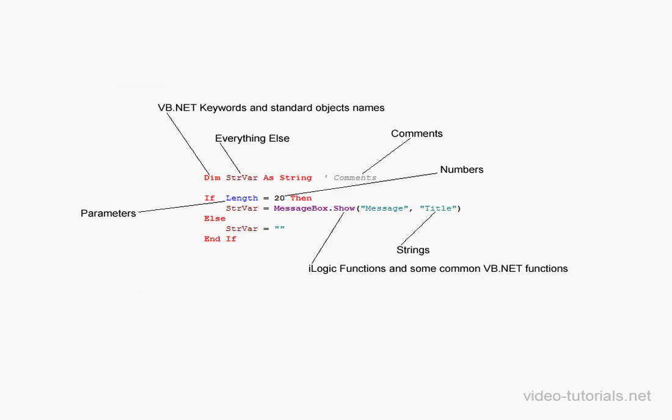Here's a diagram that explains the color coding used in iLogic. Red is for Visual Basic keywords and standard objects. Gray is for text that's commented out. Black is used for numbers and for the Boolean values True and False. Green is used to indicate text strings. Purple is for iLogic functions and for some common Visual Basic functions. Blue is for parameters of your model. And brown is used for everything else.